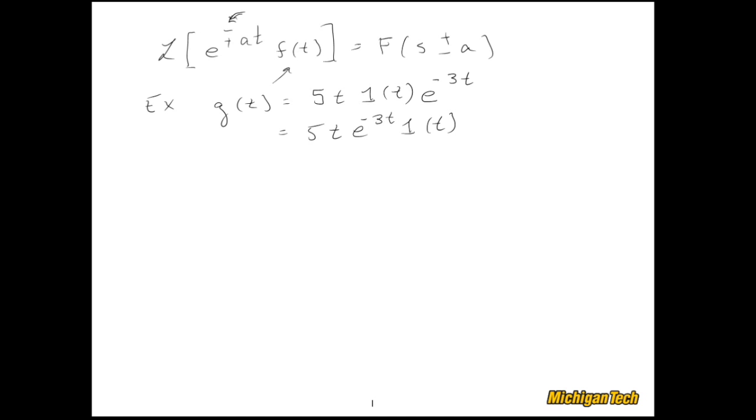Now this one is in most Laplace transform tables that you might stumble upon, but what we're going to do is use the complex shift property. So we look at this function of time and we see that there's an e to the negative 3t in it, so we can filter that out of our thinking and just focus on taking the Laplace transform of the 5t. That would be this f(t), take the Laplace transform of it, and then replace every occurrence of s with s plus 3 from that exponential function.